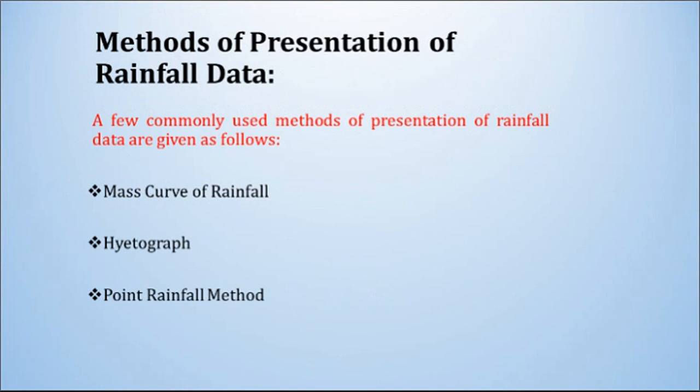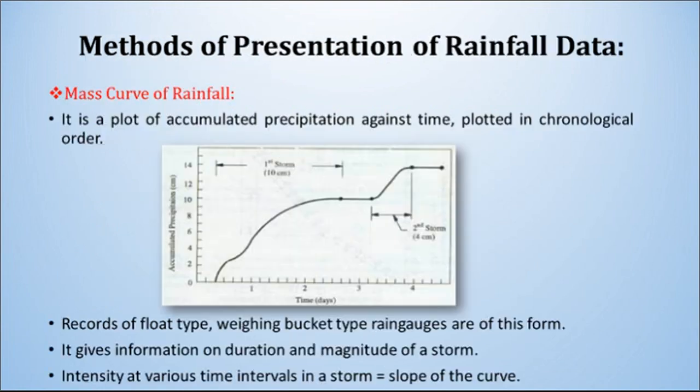Now let us move to the next part: methods of presentation of rainfall data. Rainfall data needs to be presented using specific methods. The commonly used methods are: first, the Mass Curve of Rainfall; second, the Hyetograph; and third, the Point Rainfall method. Let us start with the Mass Curve of Rainfall.